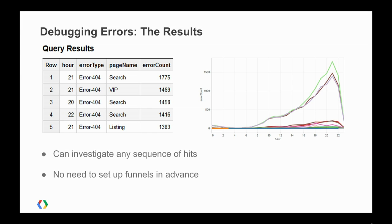We're showing an example using errors here, but the great thing about having all of our hits in BigQuery is that we can investigate any sequence. So if you wanted to look at a conversion funnel that started with a page view, then the user fills in a form, and then makes a purchase — we can do that. It's not currently possible in the Google Analytics user interface where we can only do a page view funnel. Being able to get that kind of visibility is really, really useful. And the even better thing is we can look at that historically — we don't have to apply this in advance.